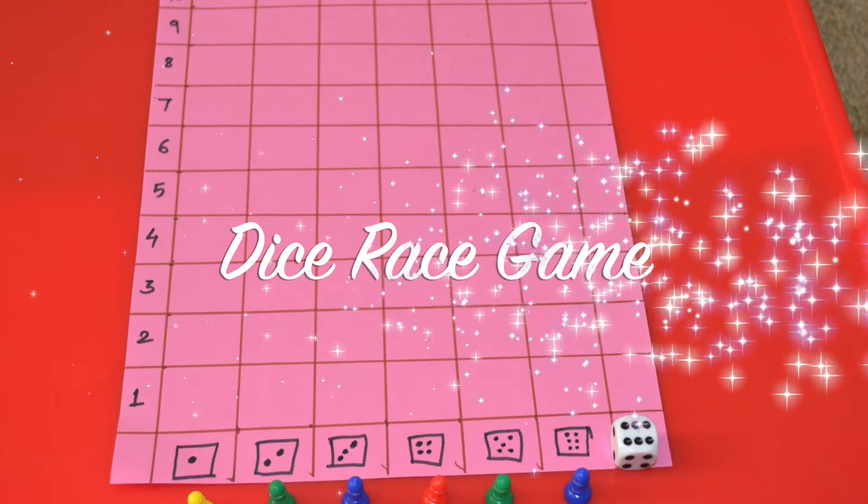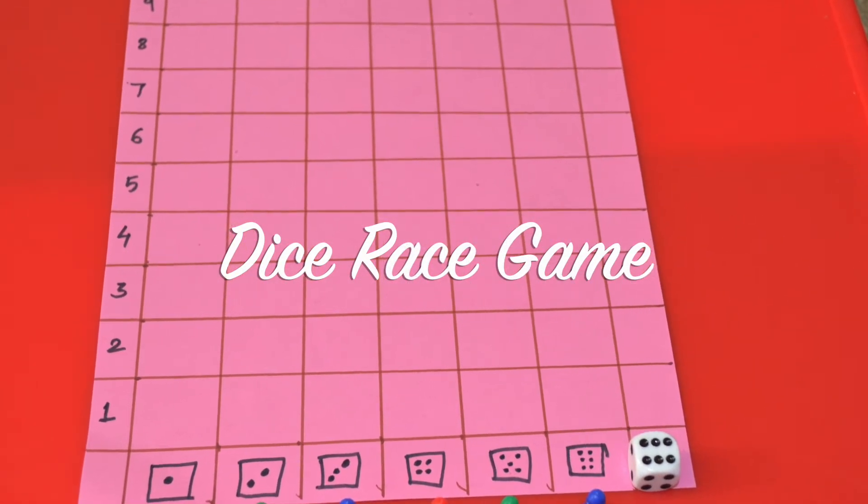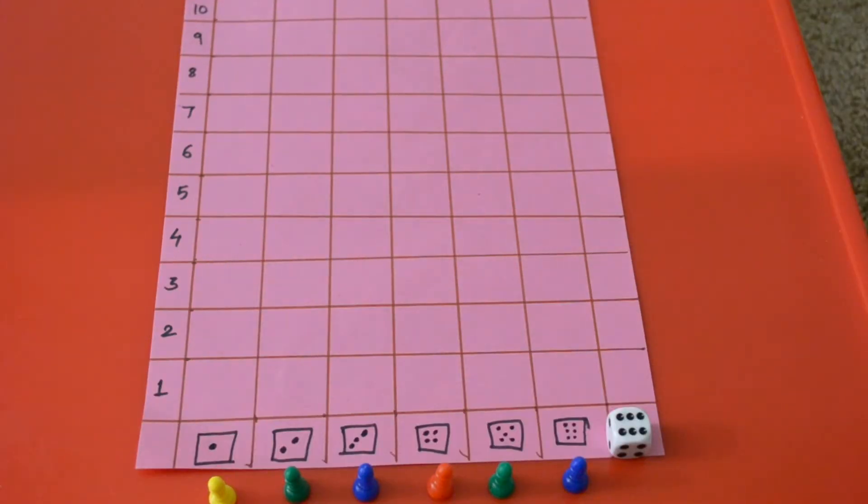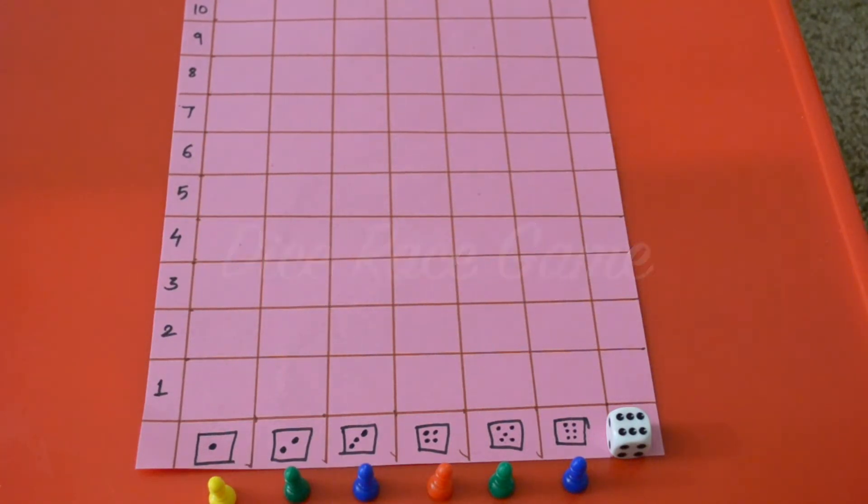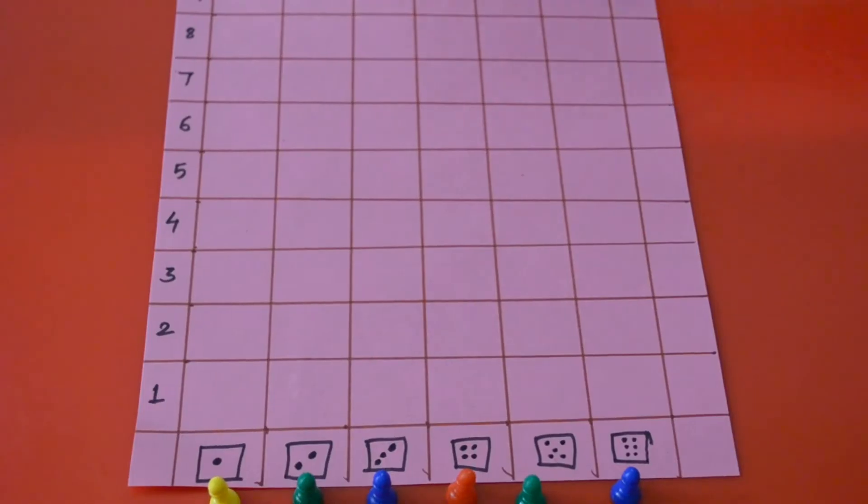Hence the activity we name as Dice Race Game. So here my activity sheet is ready and Ryan is very excited to play. So let's start the race! All tokens are ready, so ready, steady, go!